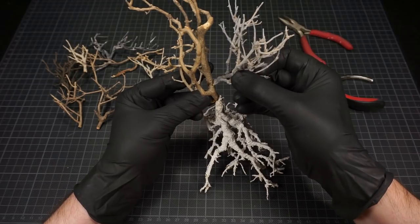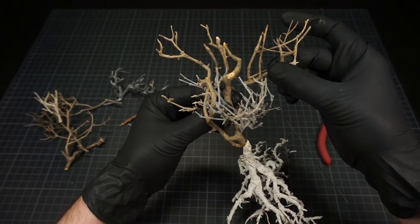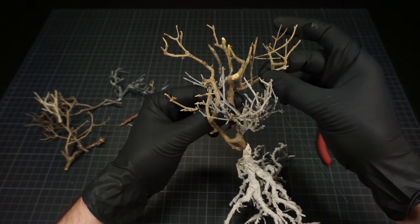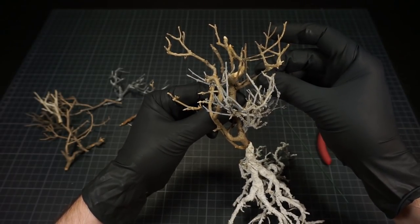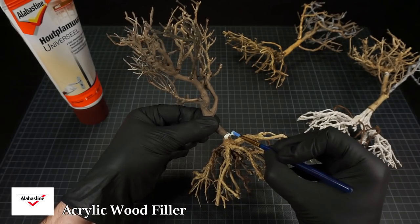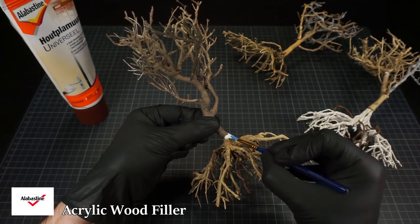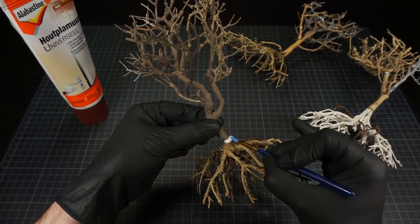I gradually add more branches and make a few tree armatures. To fill in the gaps I'm adding some wood filler followed with tile grout for some texture.